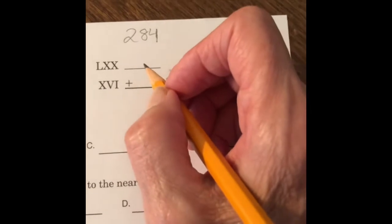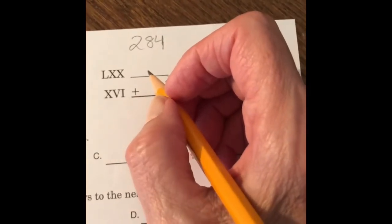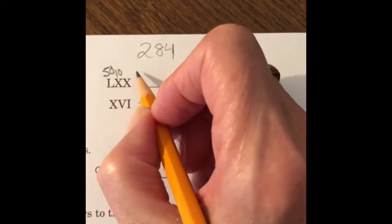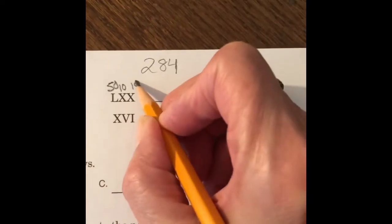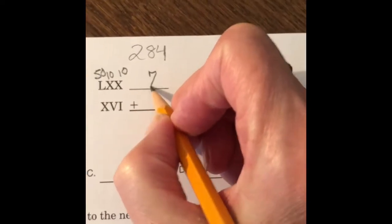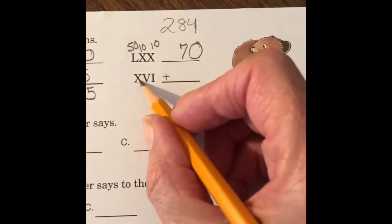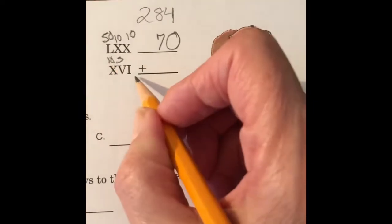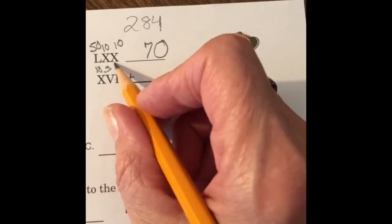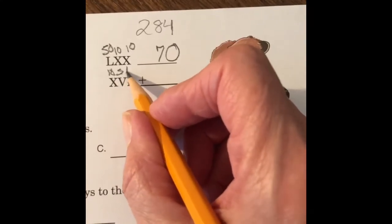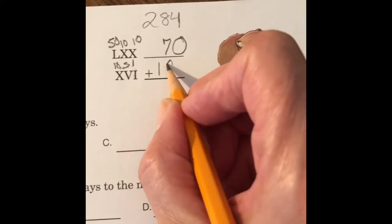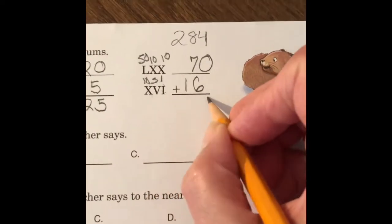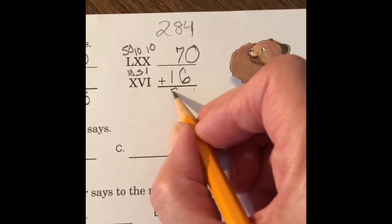LXX. Remember, what is L? L is 50. L is 50. X is 10. That's 60. Another X is 10. That's 70. So LXX is 70. X, 10. V, 5. I is 1. So it's 15 plus 1 is 16. So 10, 15, 16. 70 plus 16 is 86.